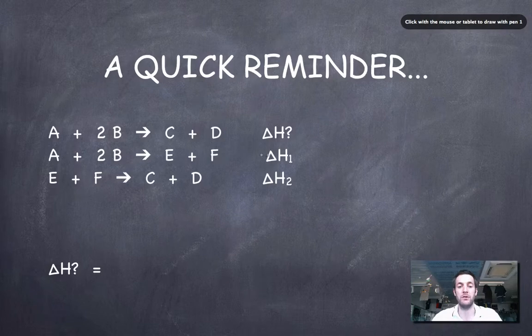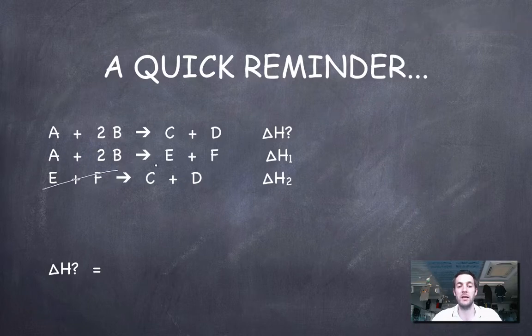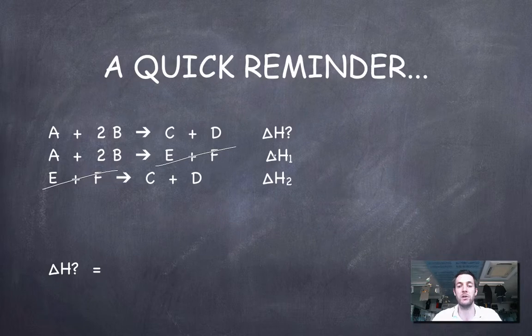You might find that if you add these two equations—you remember the E's and F's are going to cancel—we'll be left with exactly the same equation we've got here, so we can just add delta H1 and delta H2 to find this unknown enthalpy change.